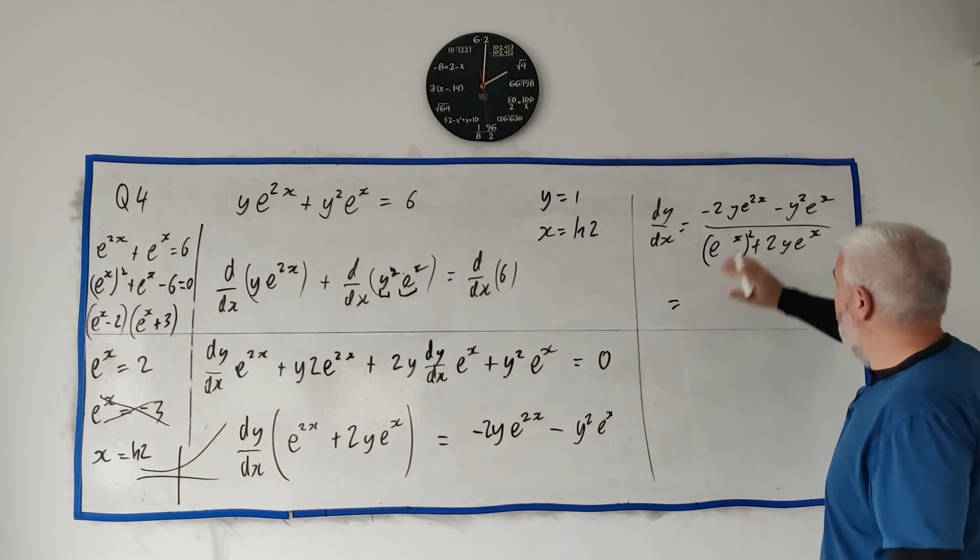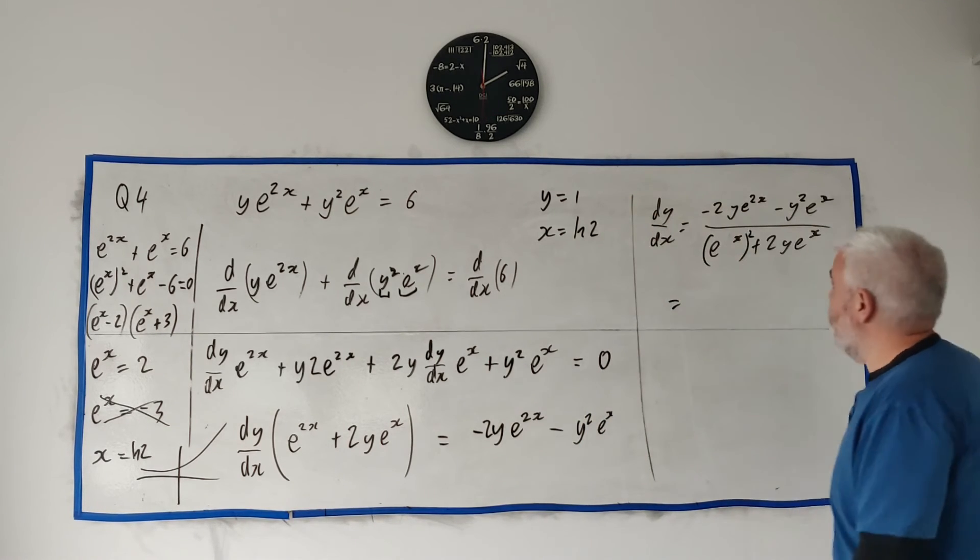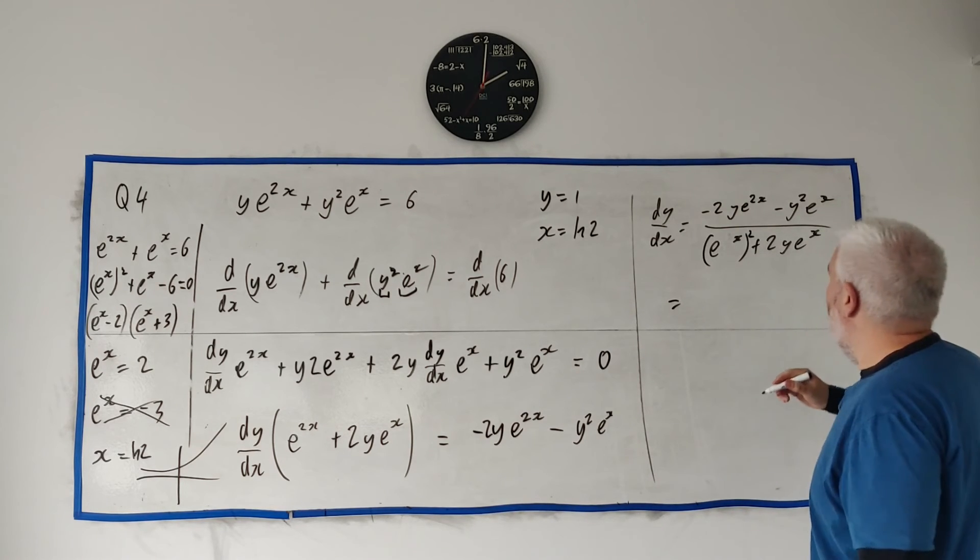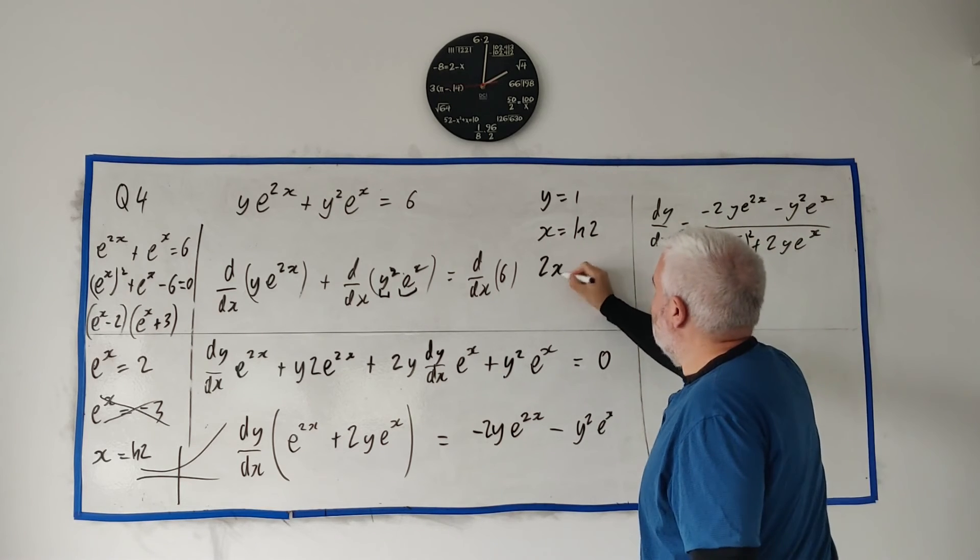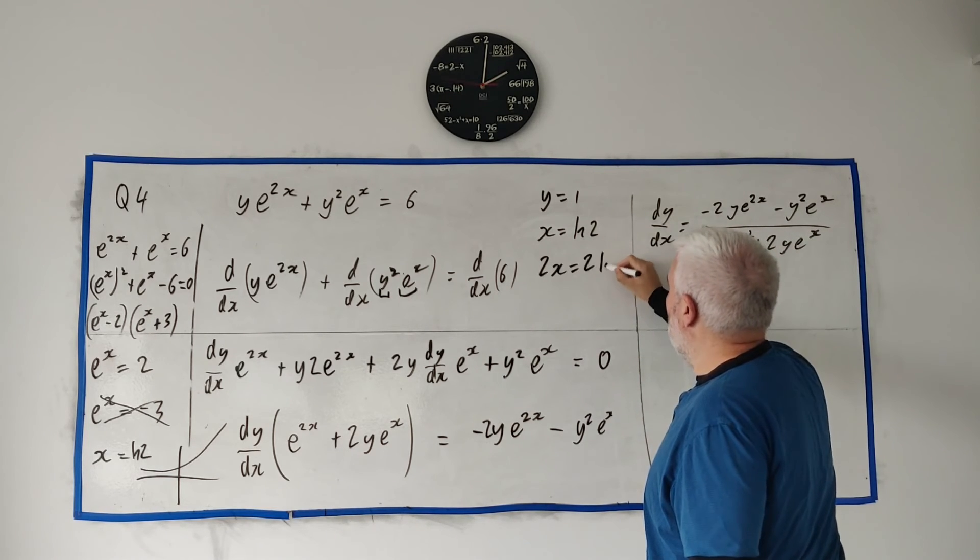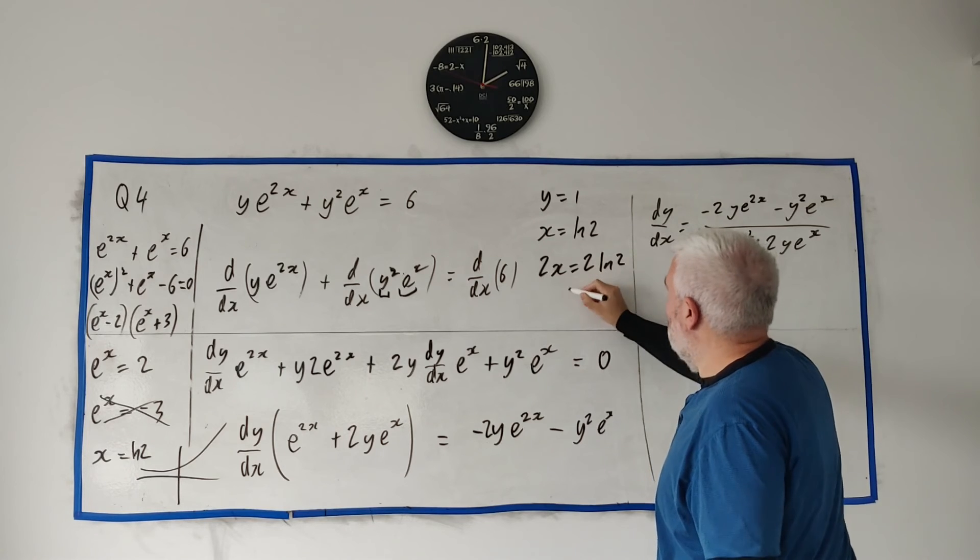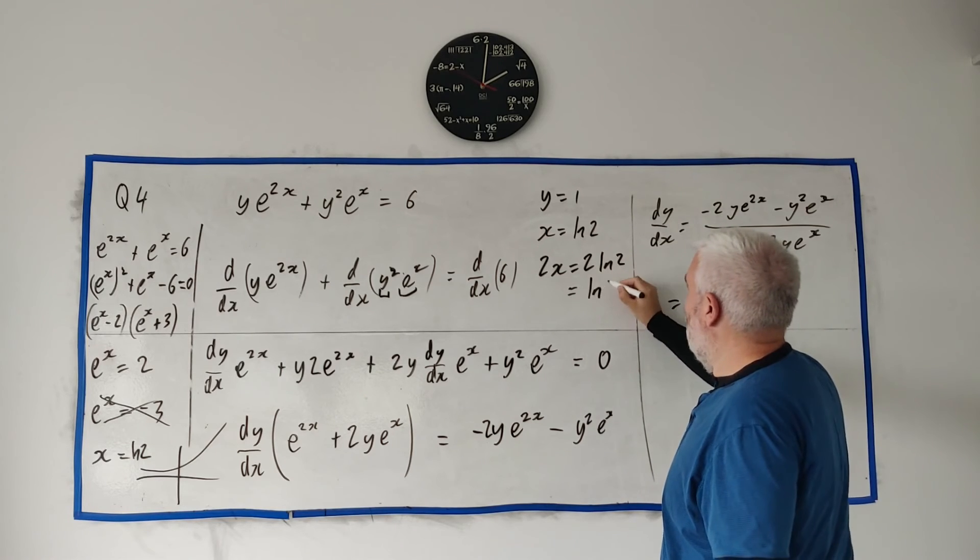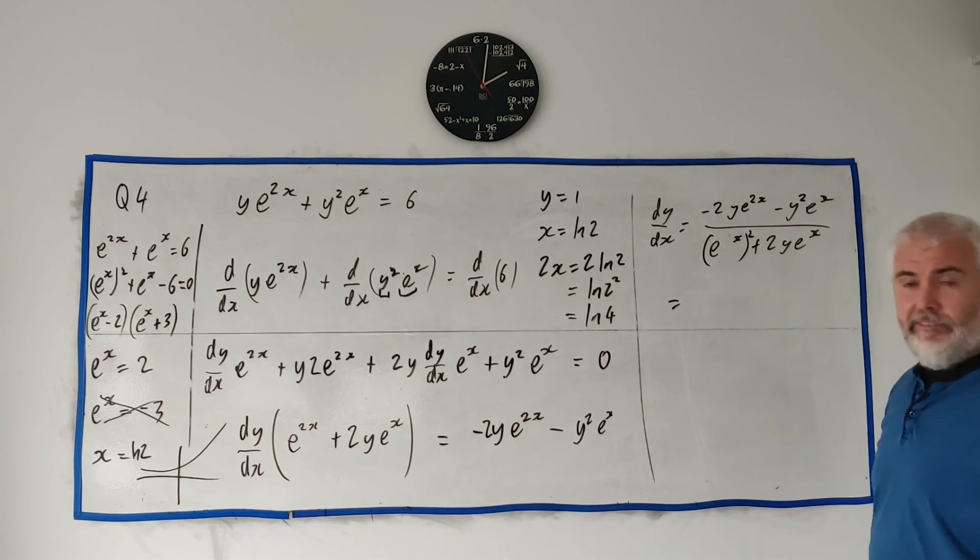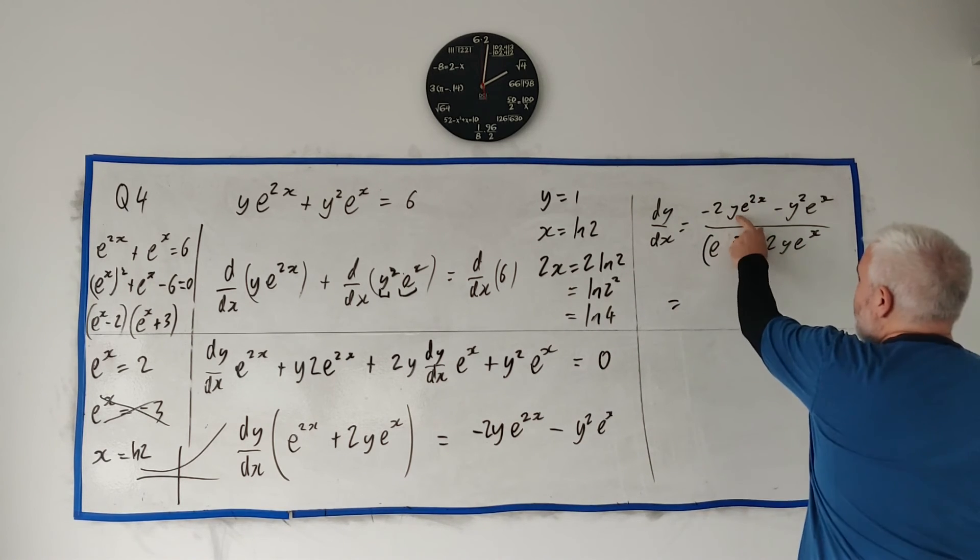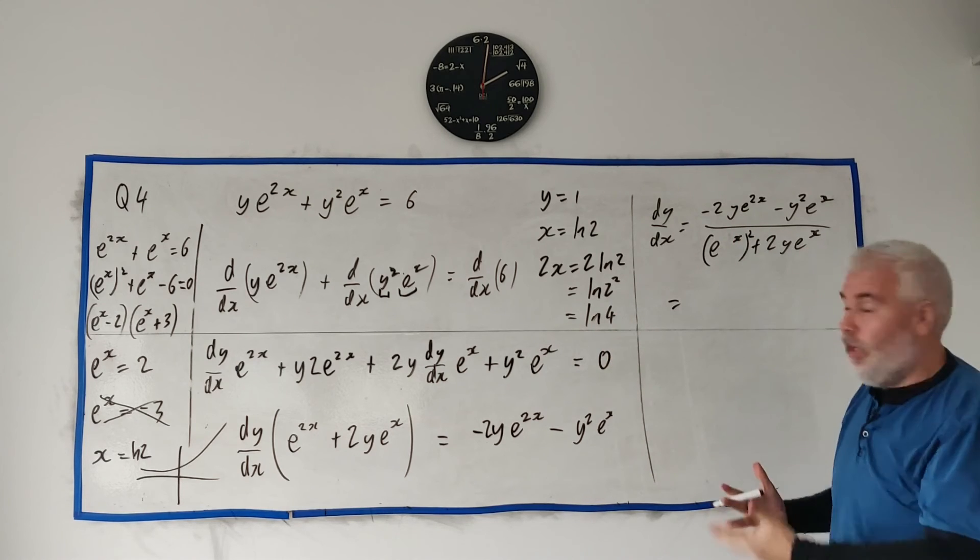So back to the real question. All we have to do is fill in these two numbers now. So you just go through this. Fill it in. It's not as scary as it looks. To save us a little bit of trouble, I will point out that 2x is equal to 2 natural log 2, which is equal to natural log 2^2, which is equal to natural log 4. So I'm going to use that fact a few times. Because e to the natural log just destroy it.